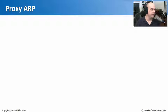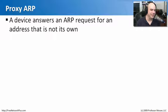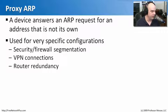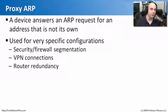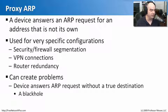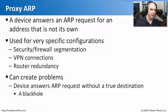Another problem that affects network communication is a proxy ARP — when a device answers an ARP request for a MAC address that's not its own, answering on behalf of someone else. This may be intentional, such as VPN concentrators that tell everyone to talk to them for VPN-bound traffic, or redundant routers communicating as if they are the same device. The problem arises when a device answers an ARP incorrectly, giving you the wrong MAC address, and your traffic ends up in a black hole.